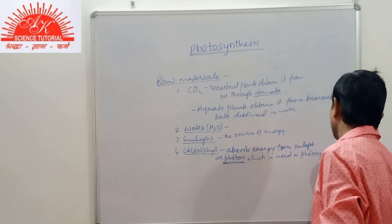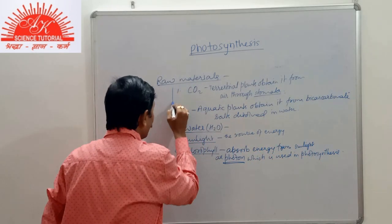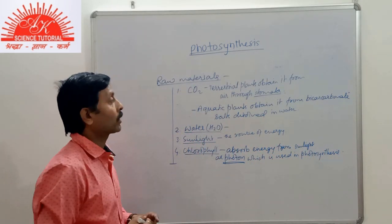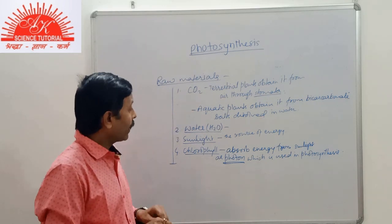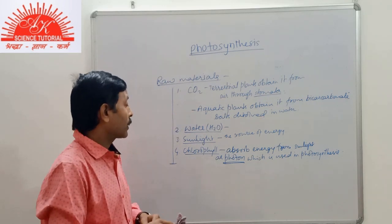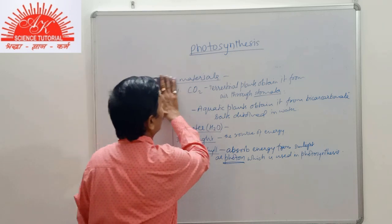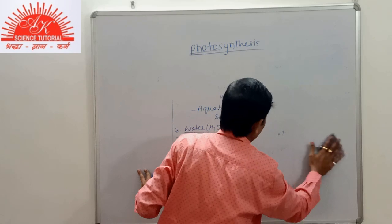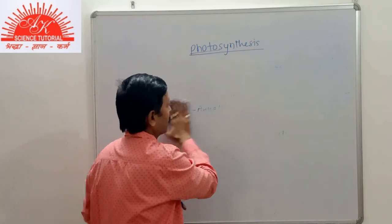So, there are four materials required for the process of photosynthesis: first, carbon dioxide; second, water; third, sunlight; and fourth, chlorophyll. These were the different raw materials related to photosynthesis.